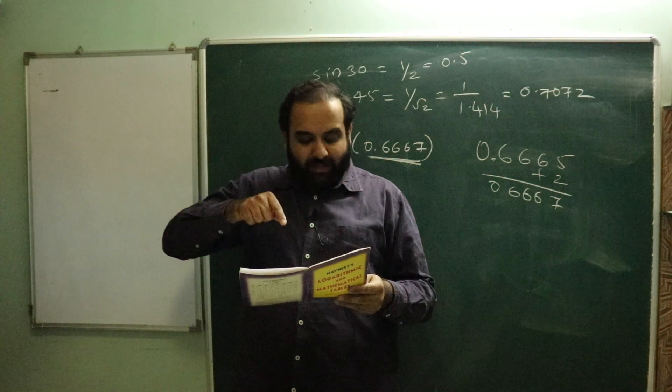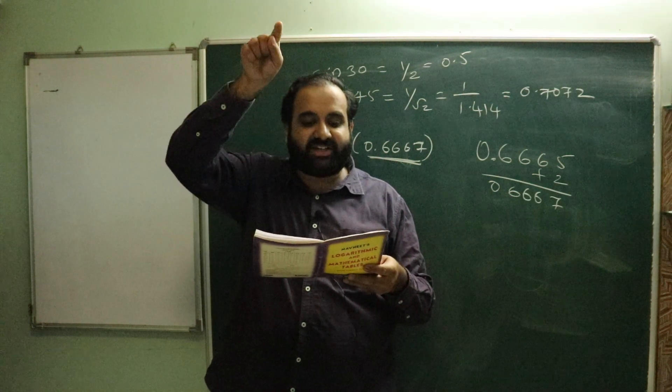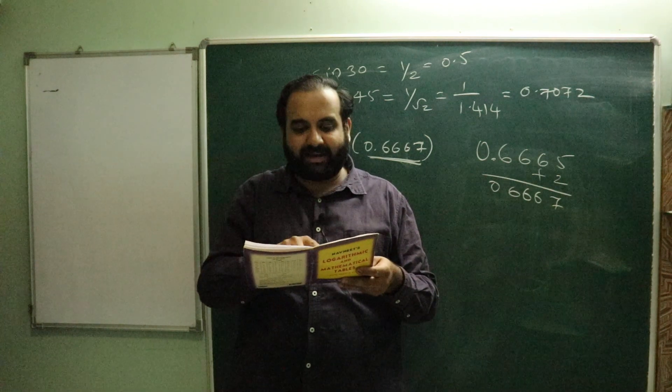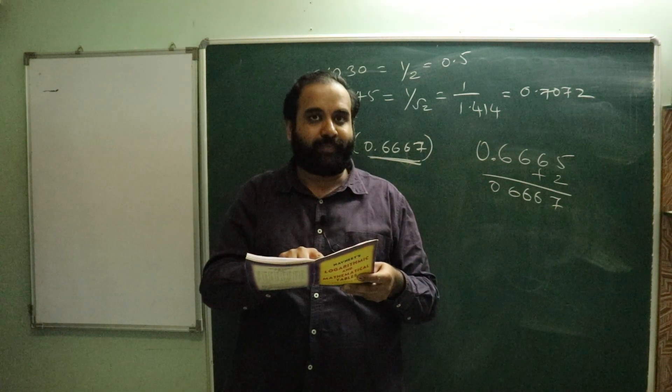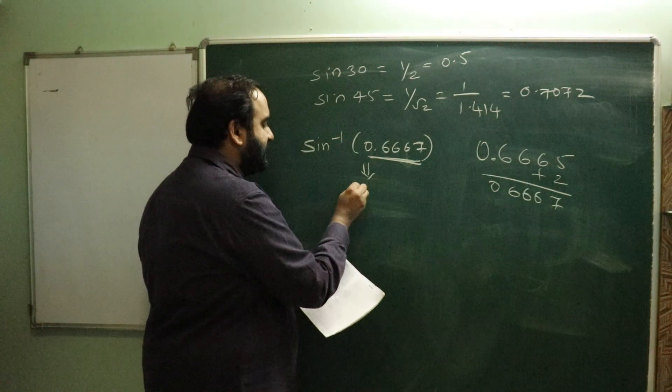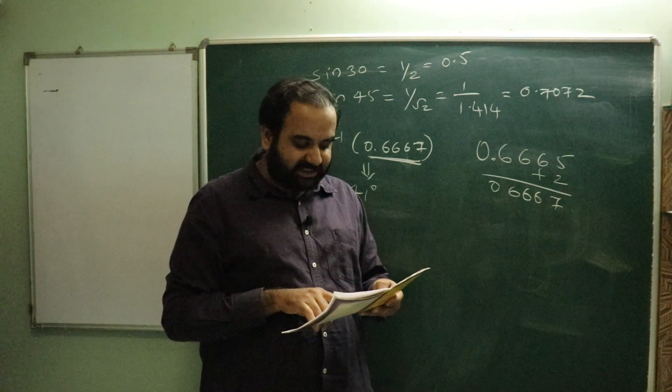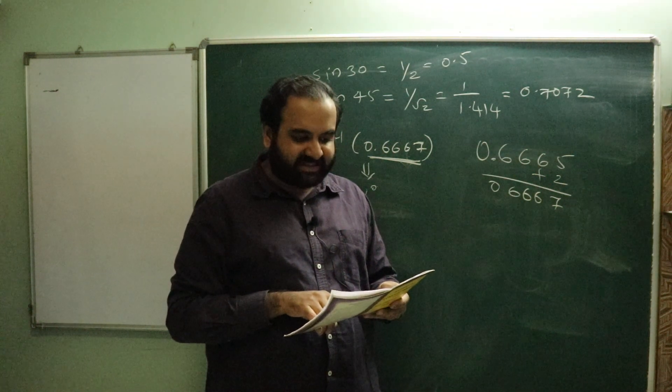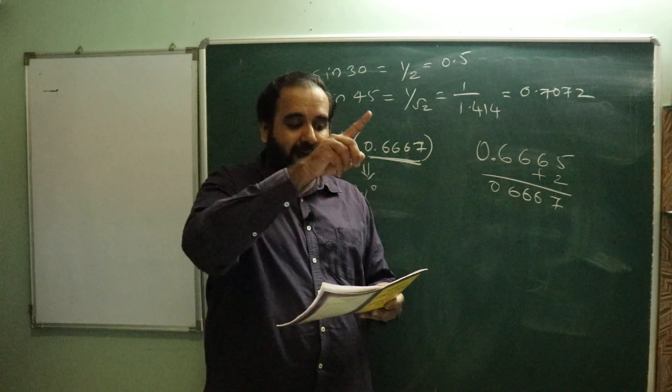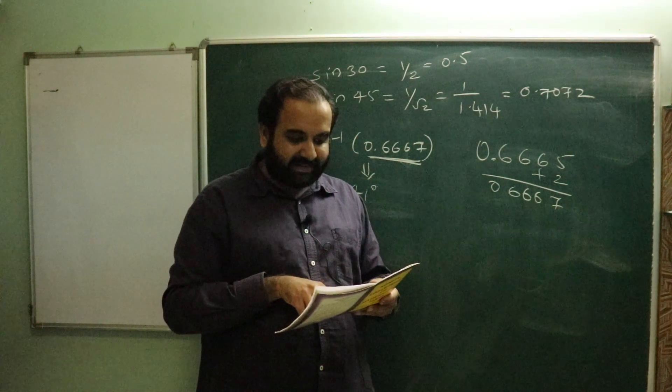Now the mean difference that we added, we have to add that also. We added a difference of two, so go straight up in that column and see - it's giving us one minute. So what is the answer for this? The answer for this is 41 degree. And what is corresponding to it? 48 minutes.